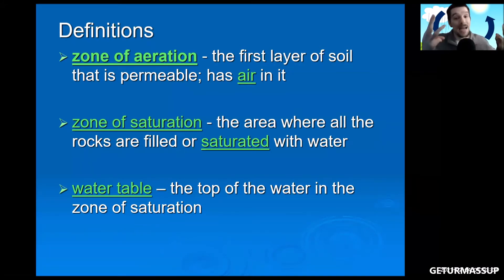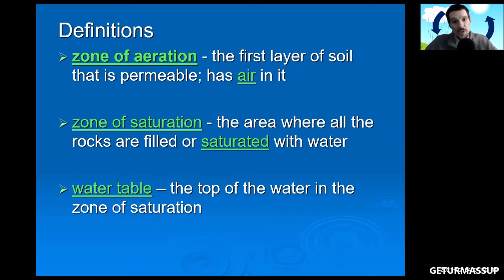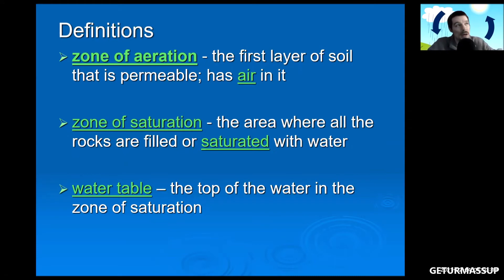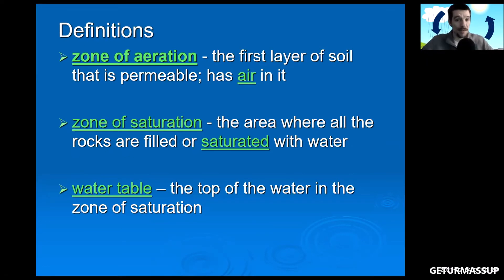The last thing to write down is the water table — the top of the water in the zone of saturation. If you go to the very top of that underground water layer, that is the water table. If it rains a lot, the water table goes up; if it doesn't rain for several days and people are using that underground water, the water table goes down.